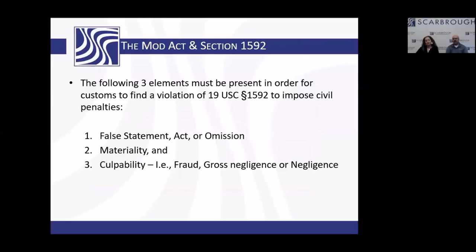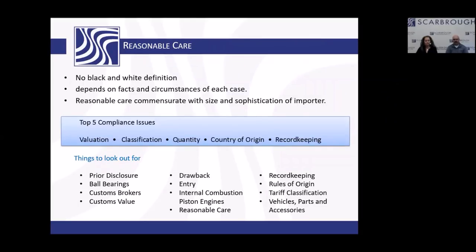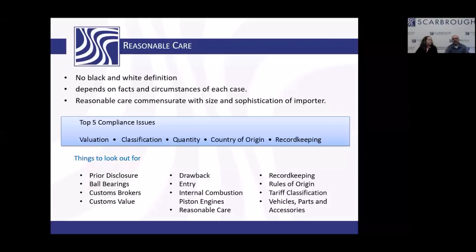Just some information about what those penalties are — false statements, omissions, materiality, and culpability. We want you to be doing the right thing all the time. The five areas of most concern are: valuation, classification, quantity, country of origin, and record keeping. Today we're going to focus primarily on classification, though we'll do a quick overview of some record-keeping requirements.